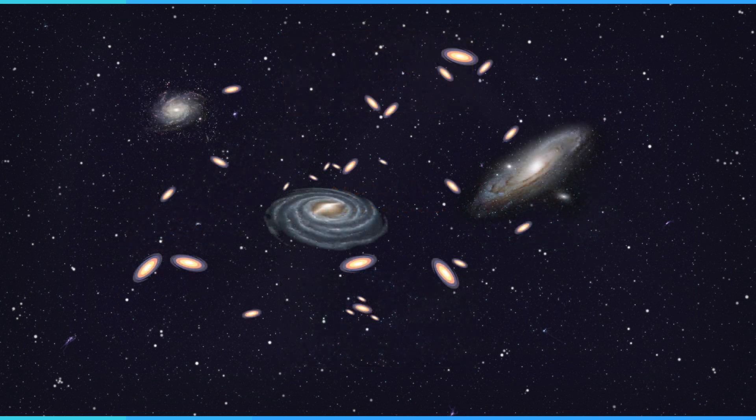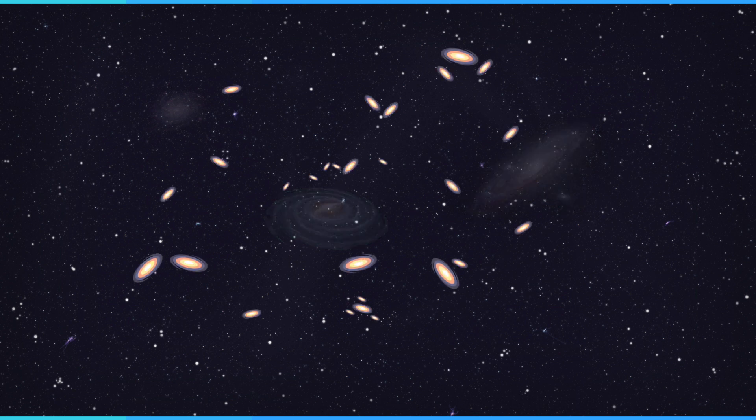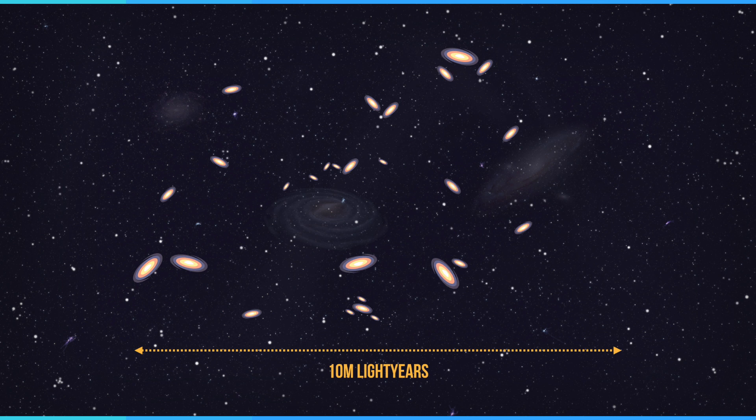Two main members sit at the core of the local group. The Milky Way and the Andromeda galaxy. Both spiral galaxies are hundreds of thousands of light years in diameter. 30 or so smaller companions are scattered within a region of 10 million light years, and dwarf galaxies surround the two primary members. The local group is a very dynamic place.